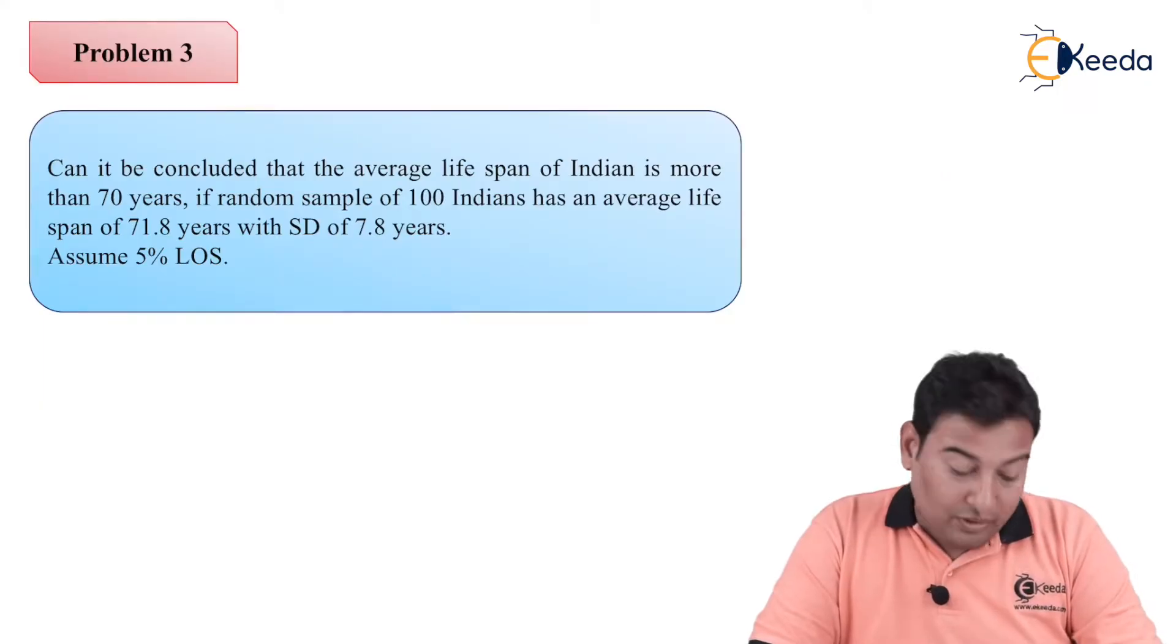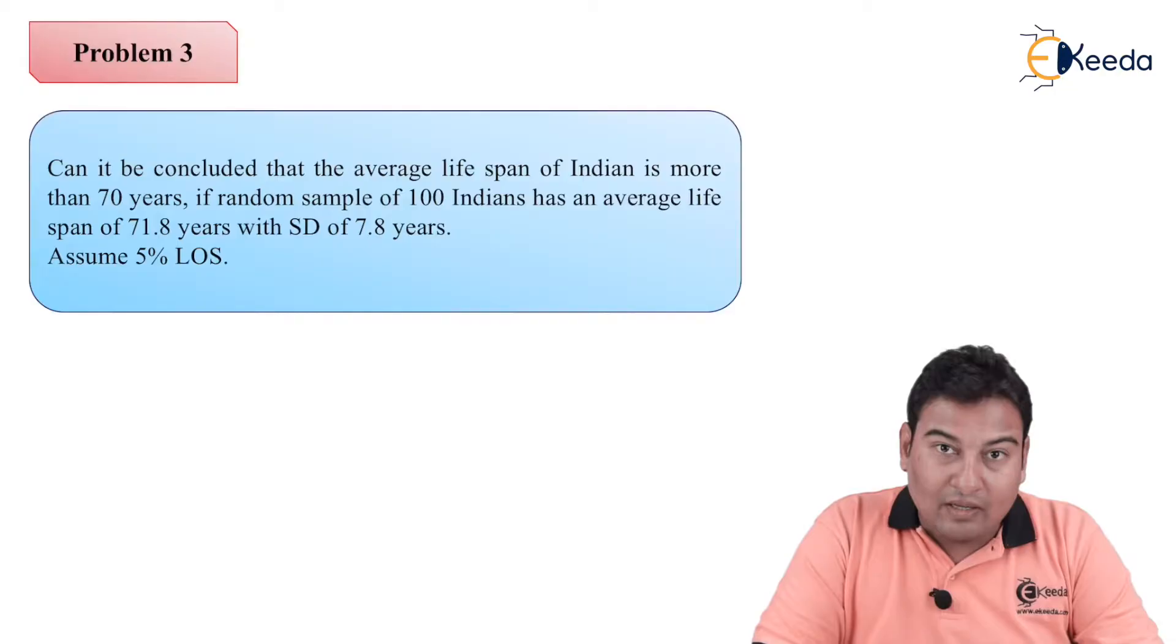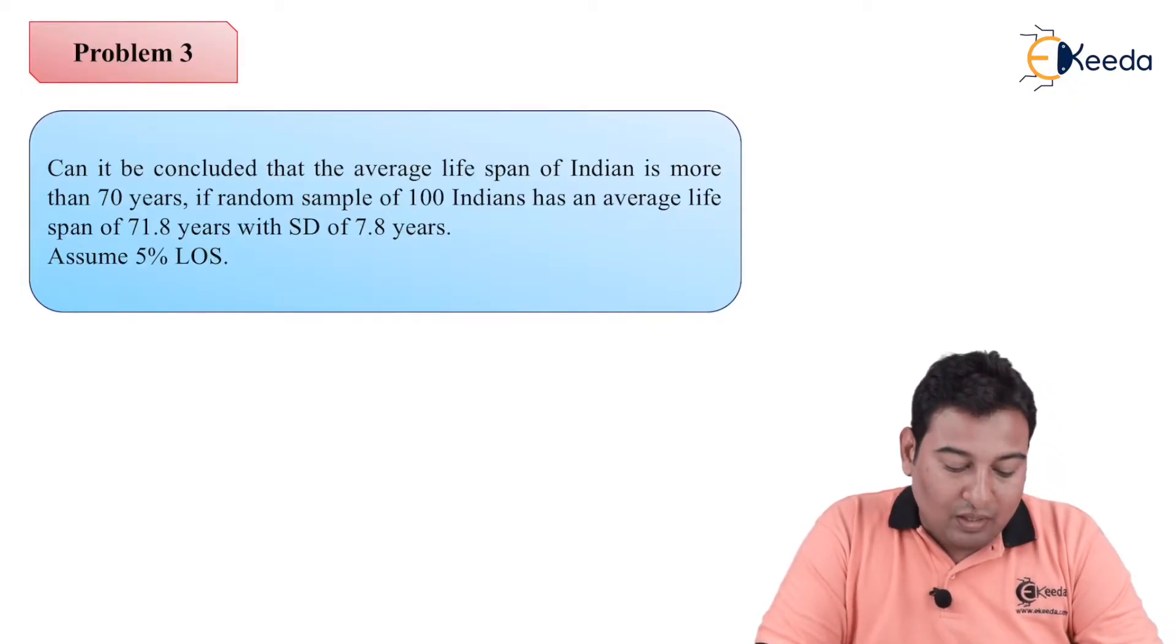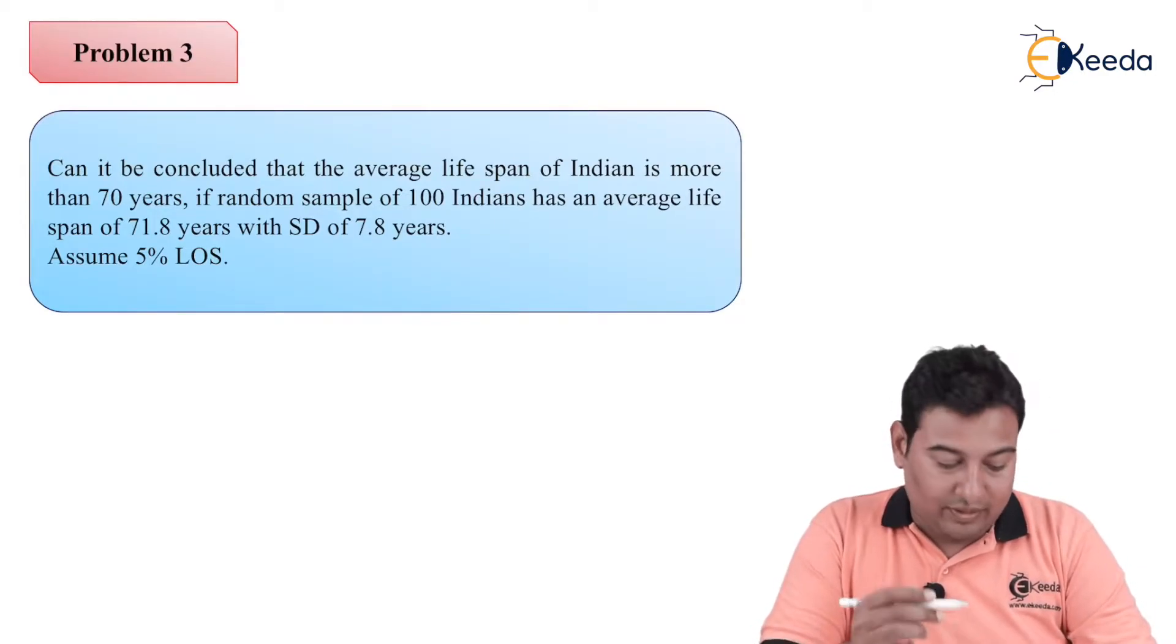Let us read the problem first. Can it be concluded that the average lifespan of an Indian is more than 70 years? If a random sample of 100 Indians has an average lifespan of 71.8 years, with standard deviation of 7.8 years, assume 5% LOS.